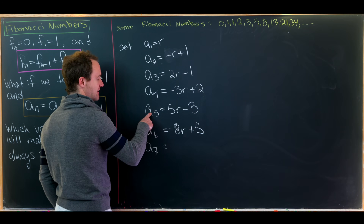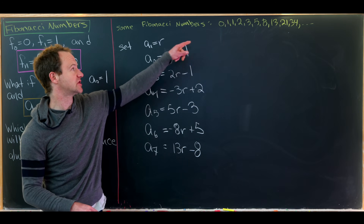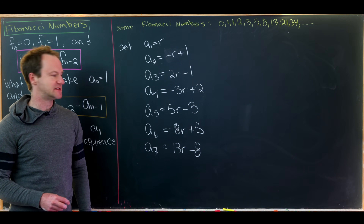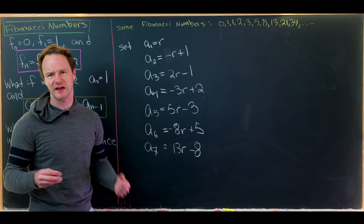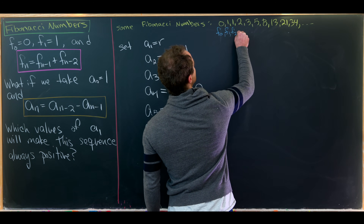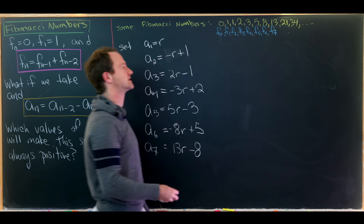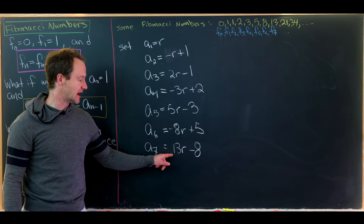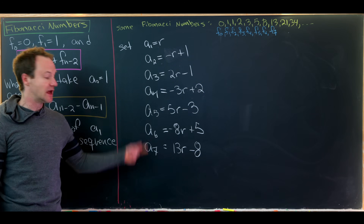Continuing, a_7 = a_5 - a_6 = 13r - 8. We can see 13 and 8 are consecutive Fibonacci numbers, as are 8 and 5, and 5 and 3. Writing the Fibonacci numbers with subscripts — F_0=0, F_1=1, F_2=1, F_3=2, F_4=3, F_5=5, F_6=8, F_7=13 — we see that a_7 depends on F_7 and F_6, a_6 depends on F_6 and F_5, and this pattern continues forward and backward.